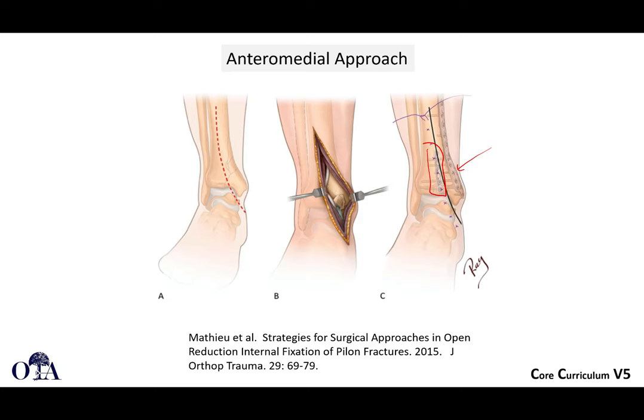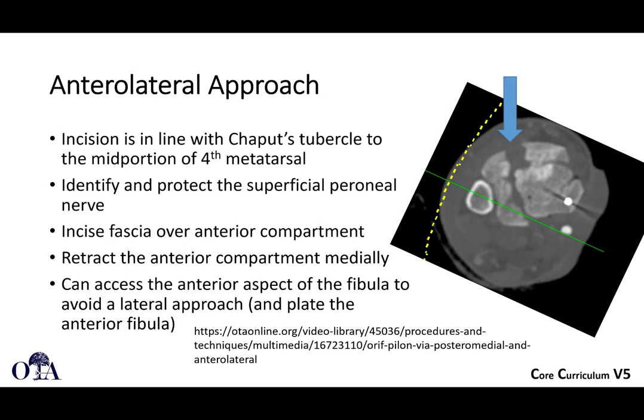The anterolateral approach is another anterior approach, in line with Chaput's tubercle to the mid-portion of the fourth metatarsal. The superficial peroneal nerve will be in your field, and often branching, so you'll need to identify it before you get down to fascia. Once that's addressed, incise the fascia over the anterior compartment and retract the anterior compartment tissues laterally to access the anterior part of the plafond. You can also get to the anterior aspect of the fibula, so if you have a fibula fracture that needs treatment, you can fix it through the same anterolateral incision.